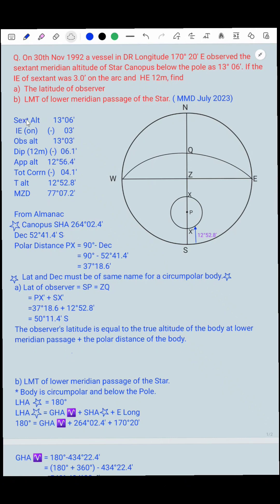So sextant altitude is already given in the question: 13 degrees 06 minutes. And index error is on. If the index error is on it will be minus, so 13 degrees 6 minutes minus 3 minutes. We got observed altitude 13 degrees 03 minutes. And dip is given 12 meters and for dip we minus 6.1 minutes. After subtracting dip we got apparent altitude as 12 degrees 56.4 minutes.